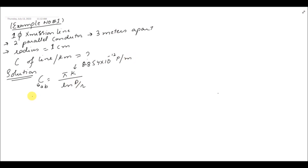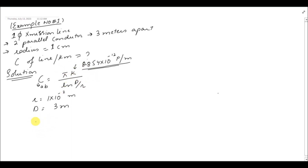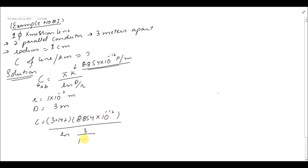The radius value is r = 1 × 10⁻² meter, d = 3 meter, and k = 8.854 × 10⁻¹² farad per meter. Putting all these values into the capacitance formula, we get C = 3.142 × 8.854 × 10⁻¹² over ln(3 / 1×10⁻²).